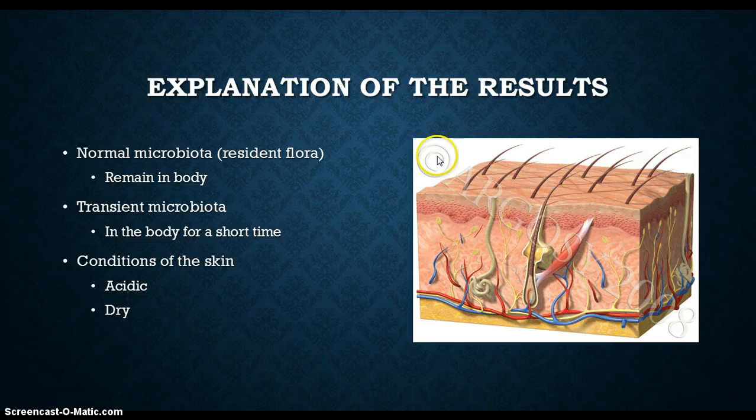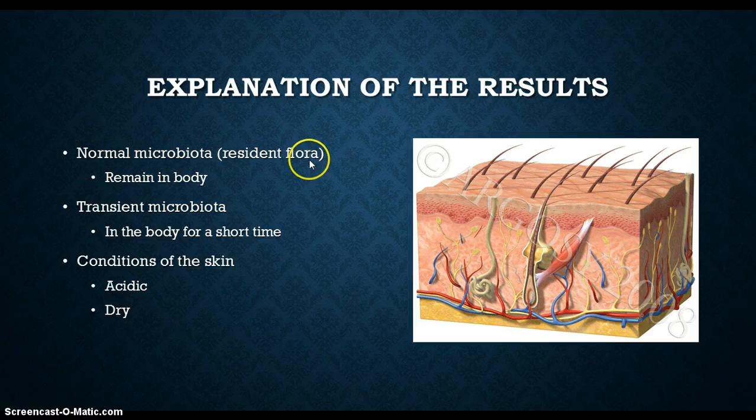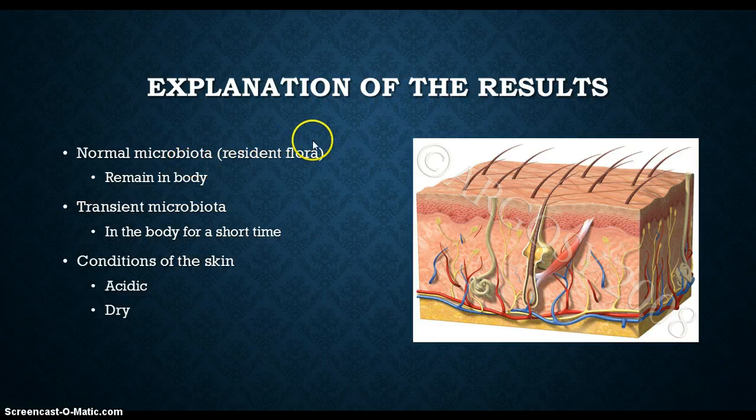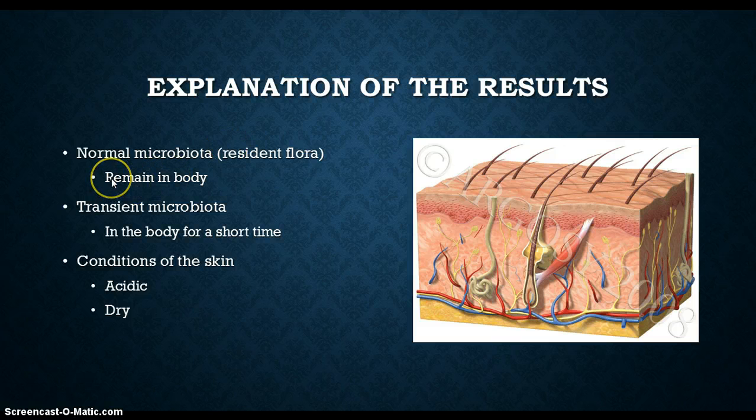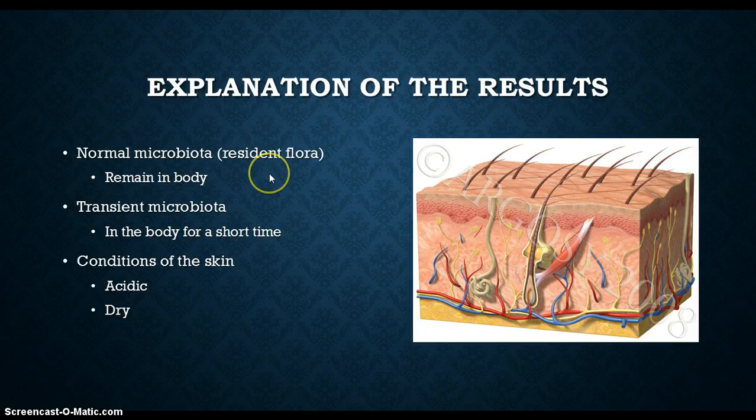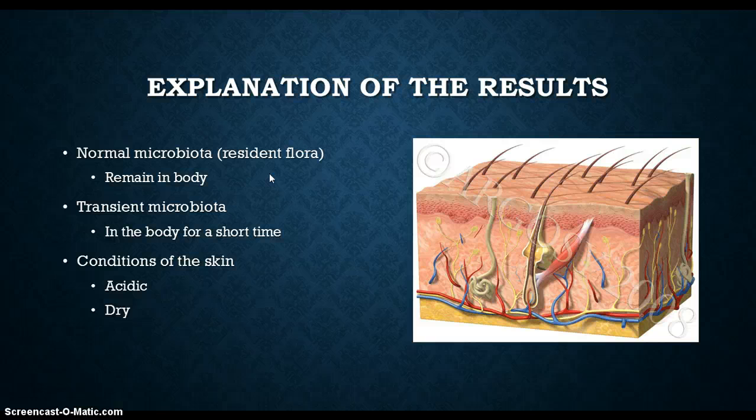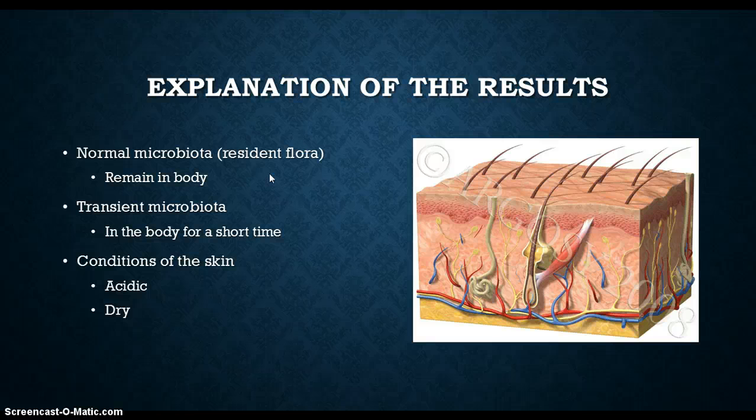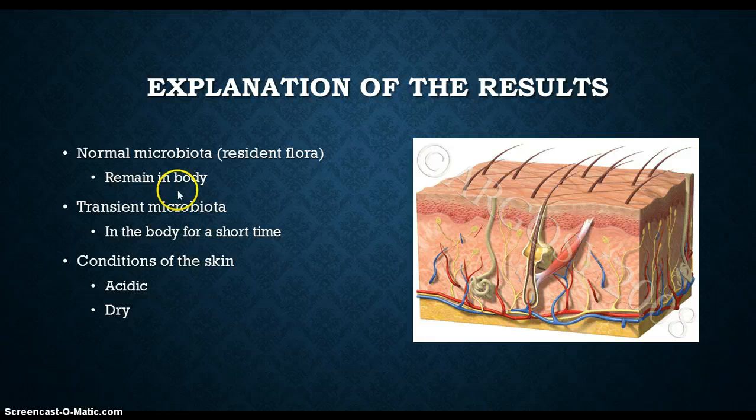Let's take a look at why some of these results are weird. You have these things called normal microbiota or resident flora, or you can also call them resident microbiota or normal flora. These are bacteria or microorganisms that remain in the body no matter what. There's a statistic that if you count the hard number of cells in the body, 90% of them are not your own somatic cells or gametic cells.